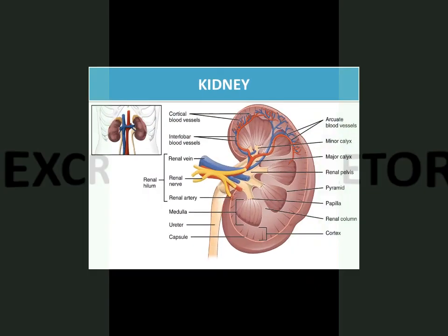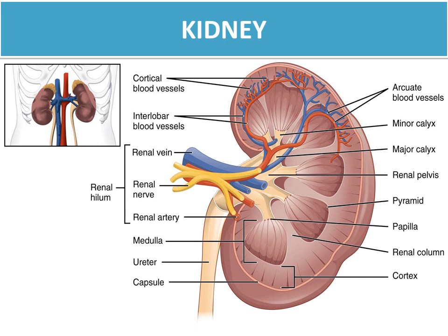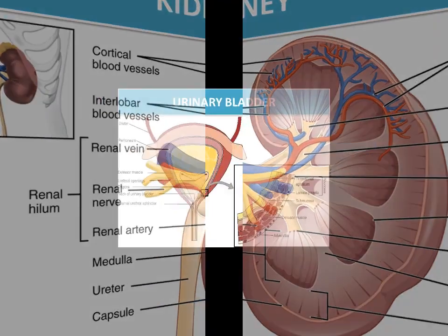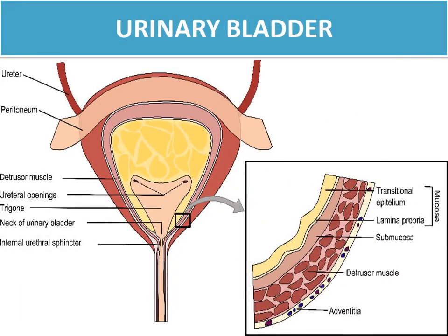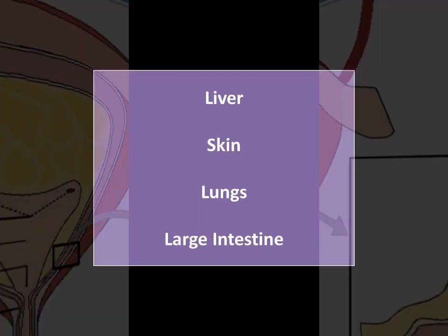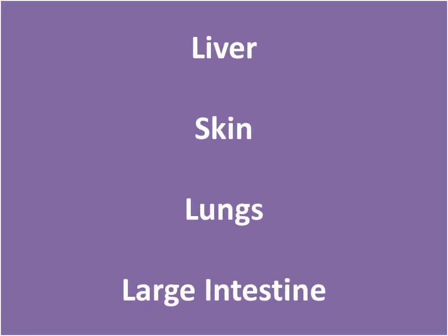The excretory system has basically three major parts or organs. The first is the kidney — there are two kidneys in the human body and they have a bi-concave shape. The second major part is the urinary bladder, where urine is stored in the human body.